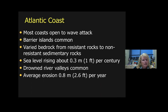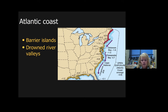Most of the Atlantic coast is ready to be bombarded by wave action, which is why we have many barrier islands. The bedrock varies from softer to harder rocks, and sea level in the Gulf of Mexico has risen a foot in the past century. We have drowned river valleys from the last ice age, and the average rate of erosion is 2.6 feet per year. The harder rocks around Florida and New England states show different coastal situations.